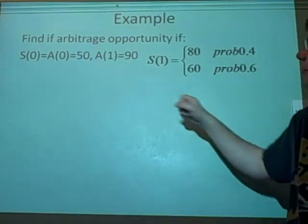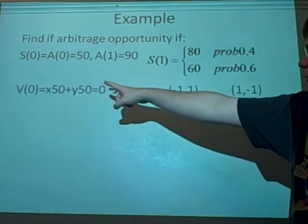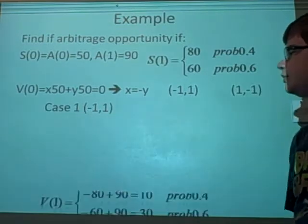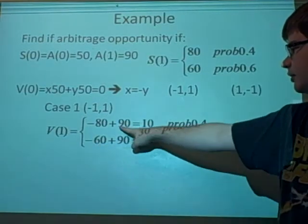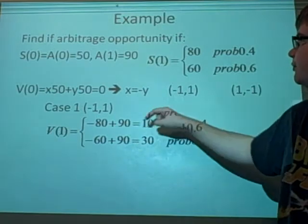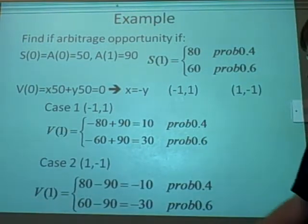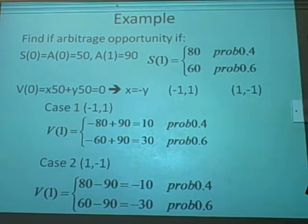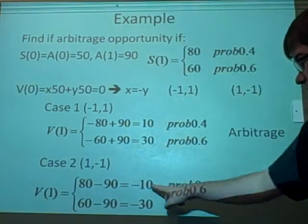It's the same question, but this time I've changed the final bond price to 90. We've got case 1: minus 1 stocks, 1 bond. Stocks have gone to 80, so we have to subtract that. This has gone to 90. Minus 80 plus 90 is 10. This one's 30. This one is an arbitrage situation. We can check the other one as well—with 1 minus 1, 80 minus 90. This one isn't because we're owing here. This one is because the chance of making a profit is 1. You will always make a profit. And this one, you'll always make a loss.